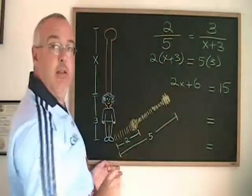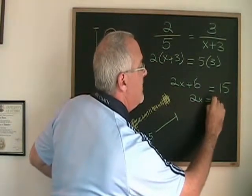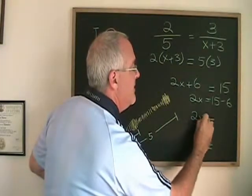If I move the six to the other side, I end up with two X equals fifteen minus six, and therefore two X equals nine.